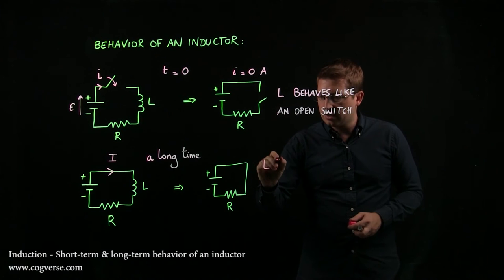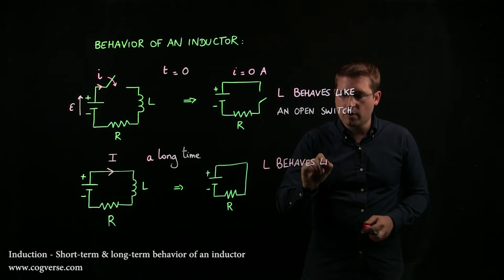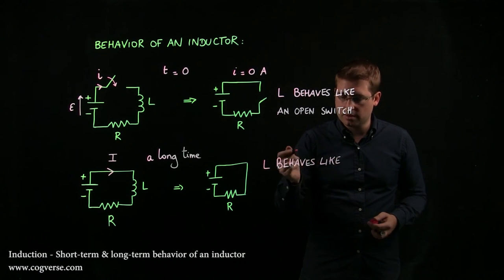So we'll write that down. The inductor behaves like a wire because the voltage across it is zero.